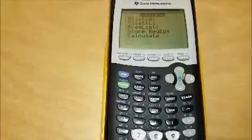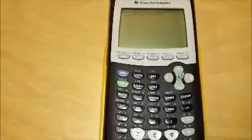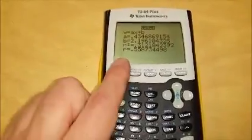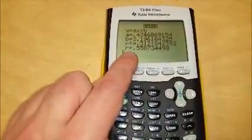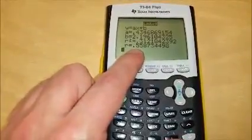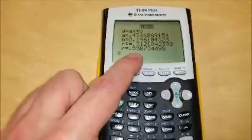Now I already had my diagnostics turned on so my r number, my correlation coefficient is 0.55 rounded to 0.59. That is not a good line of best fit.